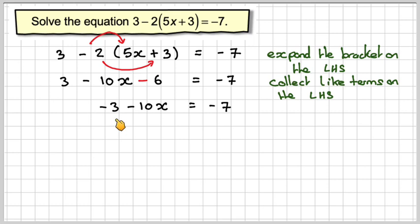So the next thing to do would be to look at this minus 3. So the opposite of taking 3 is to add 3 to both sides. Minus 3 plus 3 will give nothing there, but we've still got minus 10x. Don't forget that minus sign.